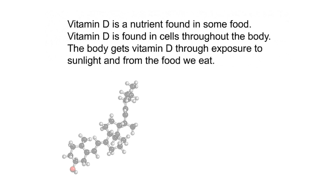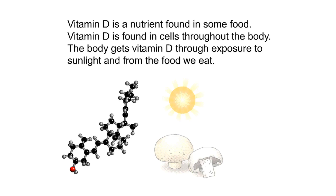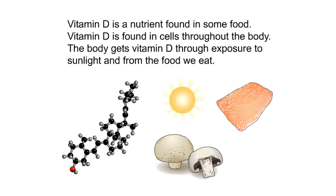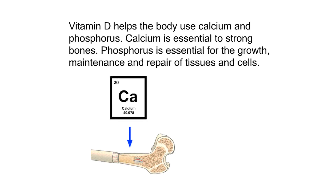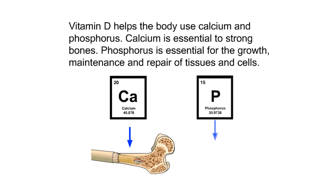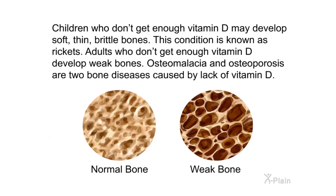Vitamin D is a nutrient found in some foods and is found in cells throughout the body. The body gets vitamin D through exposure to sunlight and from the food we eat. Vitamin D helps the body use calcium and phosphorus — calcium is essential to strong bones, and phosphorus is essential for the growth, maintenance, and repair of tissues and cells. Children who don't get enough vitamin D may develop soft, thin, brittle bones, a condition known as rickets.